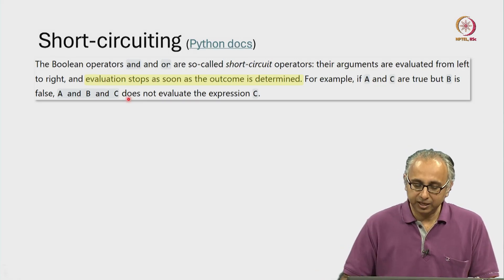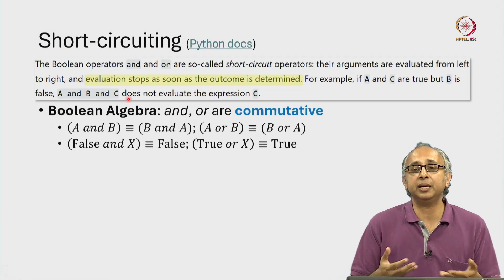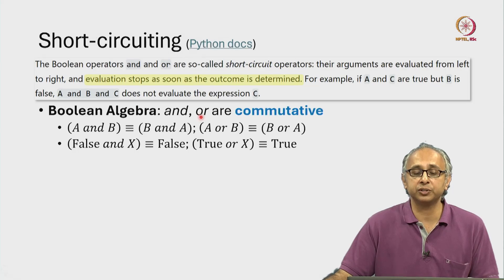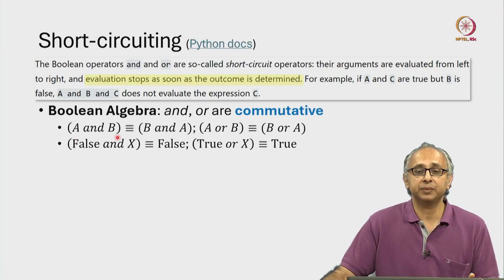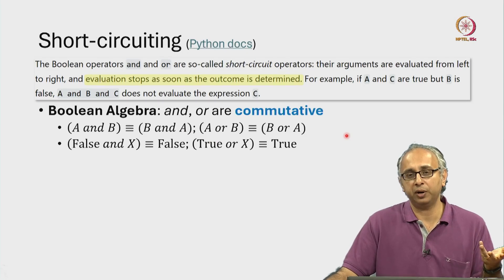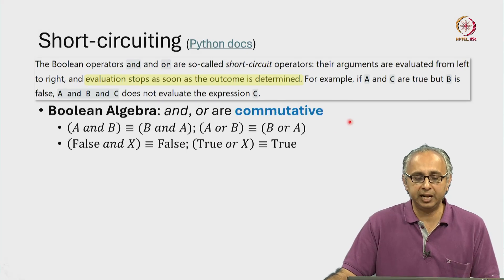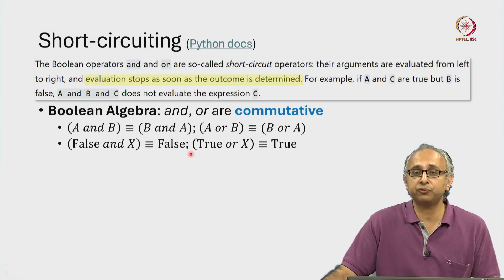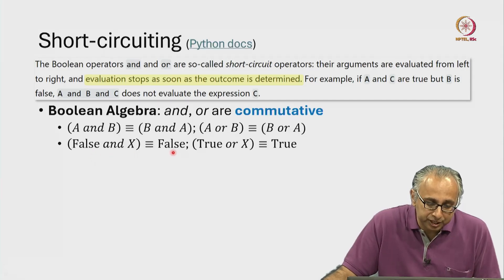So I am making use of some but not all properties that are available in boolean algebra. You see in boolean algebra when I use ANDs and ORs, they are what we call commutative, meaning A and B is the same as B and A, and A or B is the same as B or A. Those are the rules of boolean algebra. And also boolean algebra tells me that false and anything is just false. So I am making use of this fact.